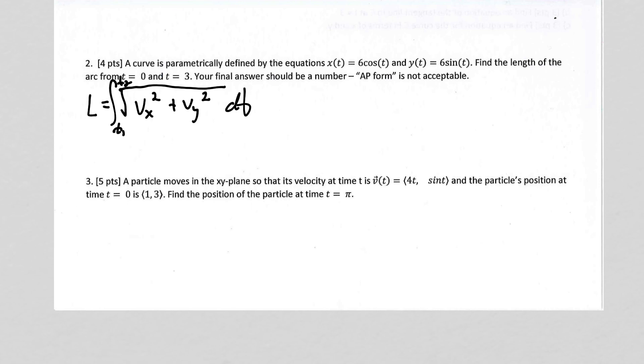So notice they gave us x of t. So I need to take its derivative to get the velocity because that's the x position. And y of t is the y position. So I've got to take the derivative of this and plug it in there for v and the derivative of this and plug it in there for the other v.